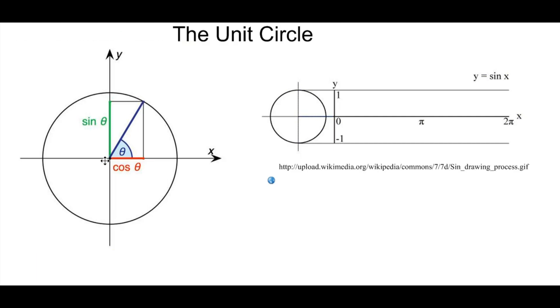Cosine of angle theta is the horizontal length of this triangle, basically the base, and sine of theta is essentially the height of this triangle. Which means that cosine of theta is 1 right here. This is theta equals 0.